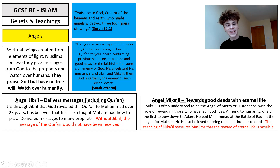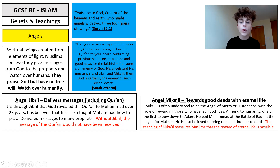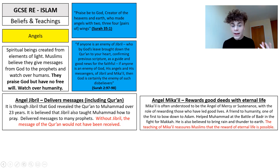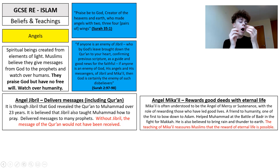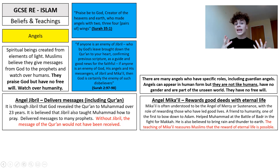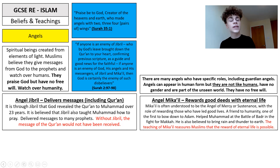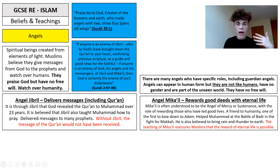We then have the angel Mikal, who rewards good deeds with eternal life. Mikal is often understood to be the angel of mercy or sustenance, with the role of rewarding those who have led good lives. He is seen as a friend to humanity, one of the first to have bowed down to Adam, helped Muhammad in battle, and is also believed to bring rain and thunder to the earth. The teaching of Mikal reassures Muslims that the reward of eternal life is possible. Angels can appear in human form but are not like humans — they have no gender, are part of the unseen world, and have no free will, so they continually praise God and fulfil his tasks.